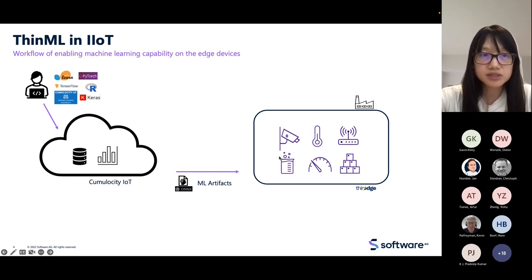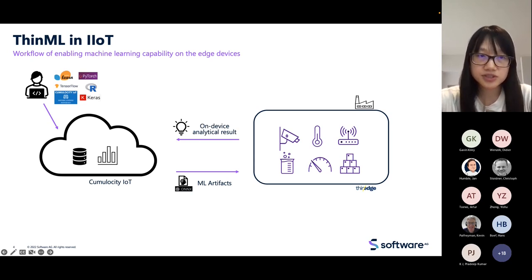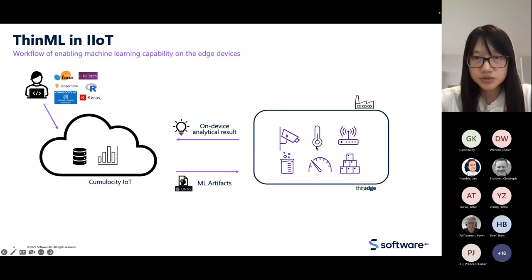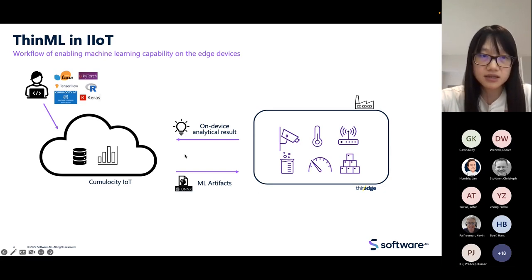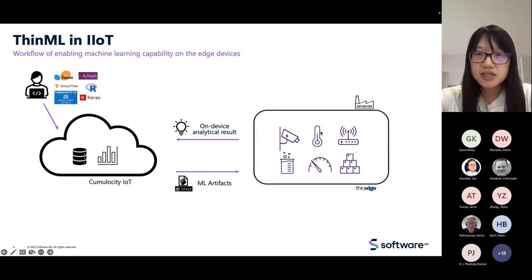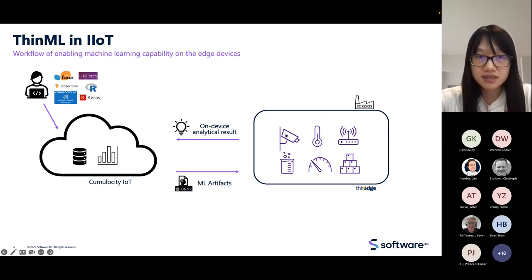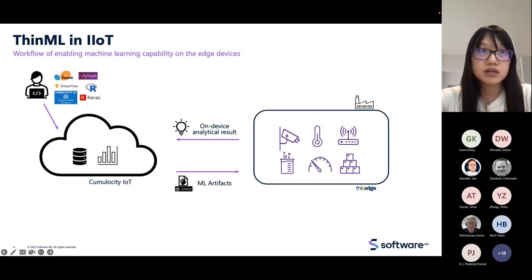Each device has its own machine learning computation capability. Finally, each device can start to generate its own analytical results by feeding its own raw sensor data to the just-deployed model. The Cumulocity Management Console can see the anomaly score and predictions from the model. In this demo, I execute a simulator on the device to simulate the situation where the device generates sensor data, performs on-device computation, then sends back analytical results via MQTT channel to the cloud.